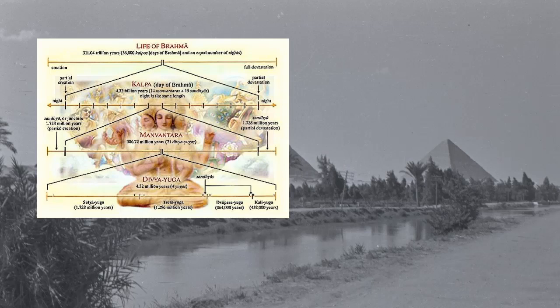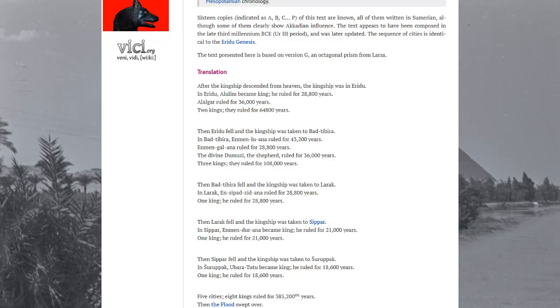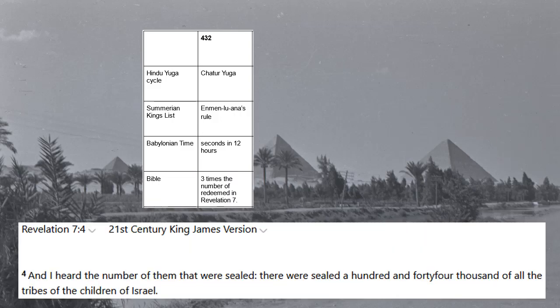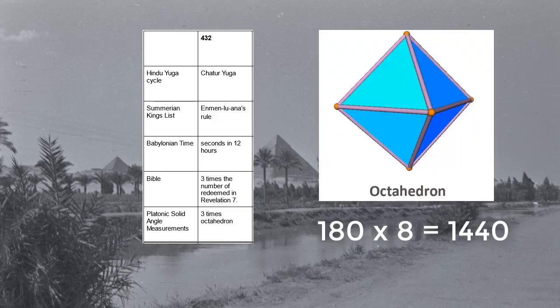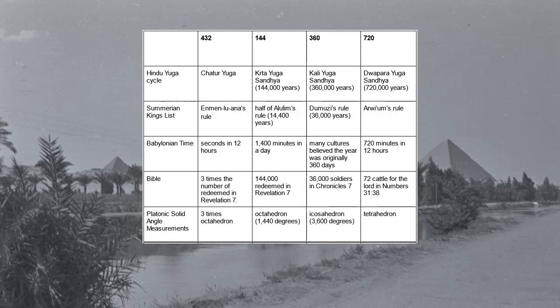The number 432 and related numbers are found in many religions of old. In ancient Hindu astrology, 4,320,000 years is the length of a yuga cycle. The number is also found in the late 2nd century BC tablet known as the Sumerian Kings List, which contains a list of kings before and after the biblical flood. This includes the king Enluana, who is said to have ruled for 43,200 years. There are also 43,200 seconds in 12 hours, which we can attribute to systems put in place by the ancient Babylonians. 432,000 is three times the number 140,000 members of the tribes of Israel mentioned in the book of Revelation. And lastly, 4,320 is exactly three times the added angle measurements of an octahedron.